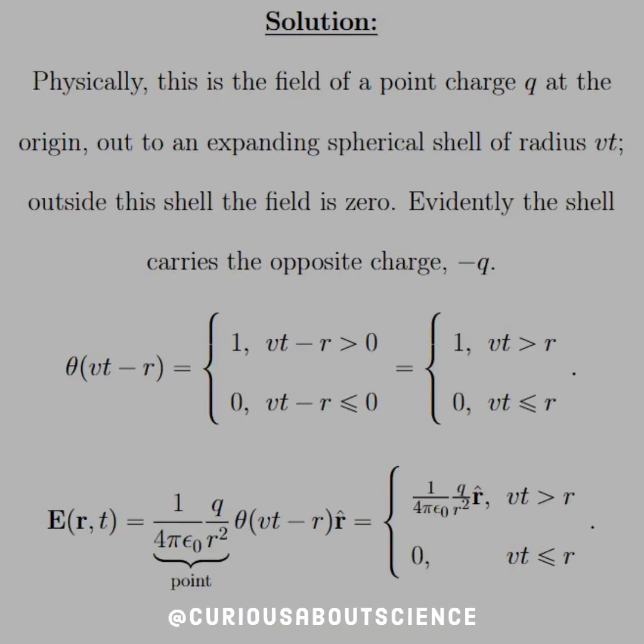So physically, what this is saying is that the field of a point charge, notice that we have 1 over 4π epsilon naught q over r squared, that is a point charge q at the origin. And what it's saying is that out to an expanding spherical shell of radius vt, velocity times t gives you distance, outside the shell the field is zero, which is surmised in the step function itself. And evidently the shell carries the opposite charge negative q. This is the reason because the field outside the shell is zero, so the two charges in the Gaussian surface have to cancel.